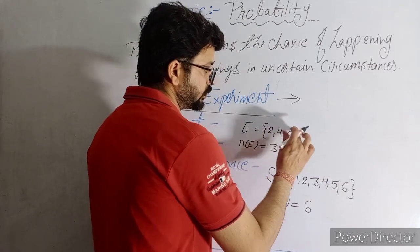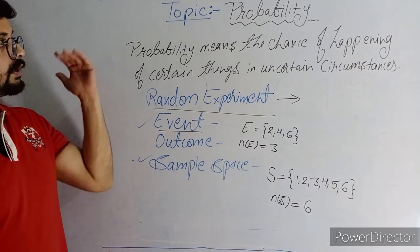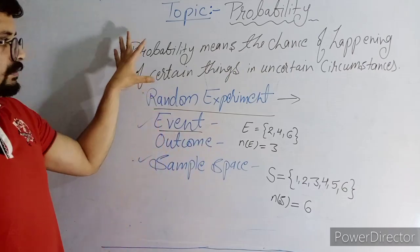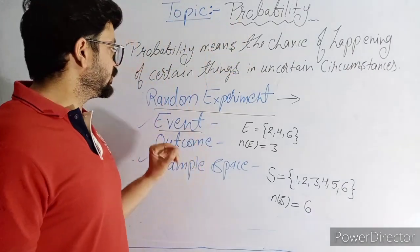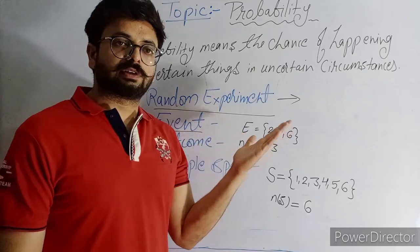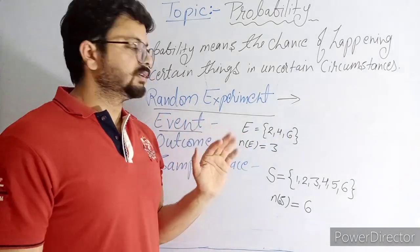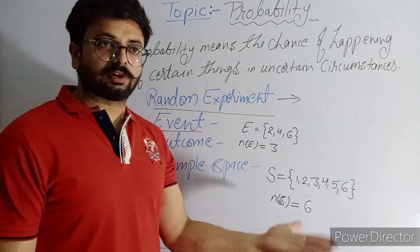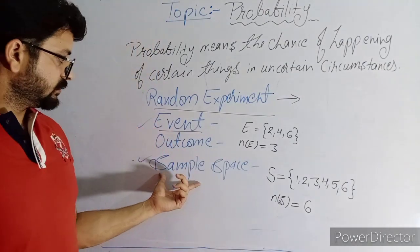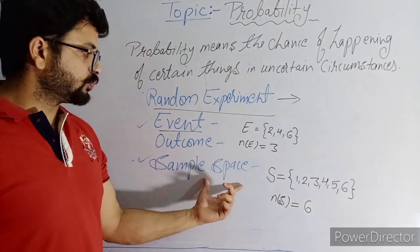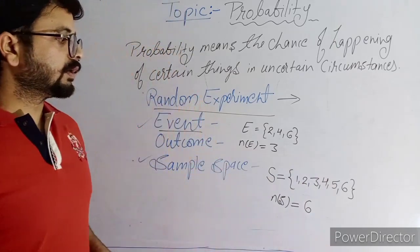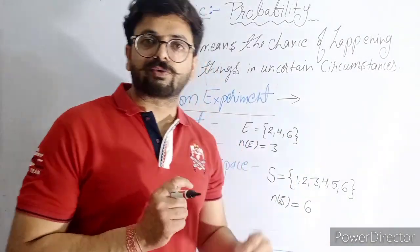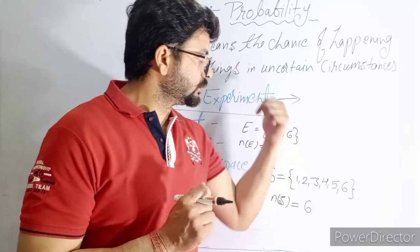Now we come to the main topic — probability. To recap: in a random experiment, we cannot predict the result; an event consists of whatever outcome comes at the end; and sample space is the total possible outcomes. Now we will discuss the formula and criteria of probability.